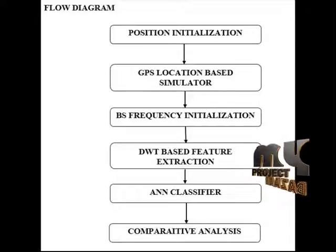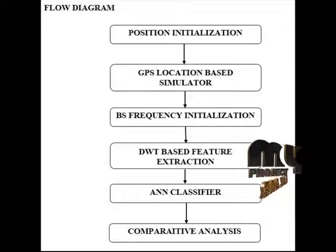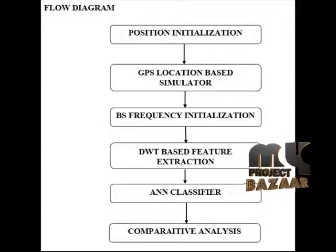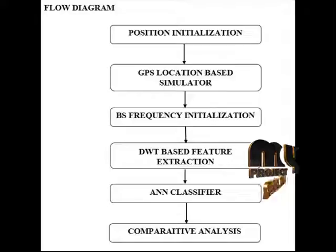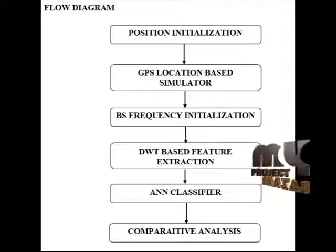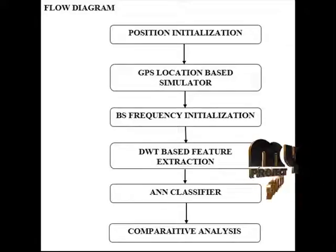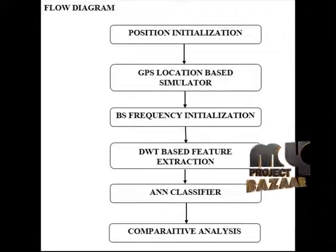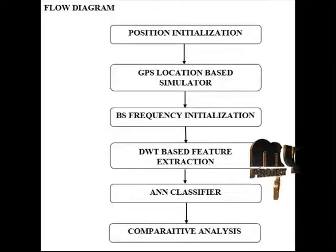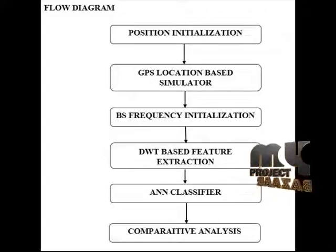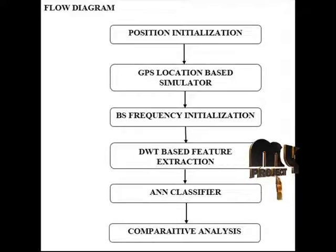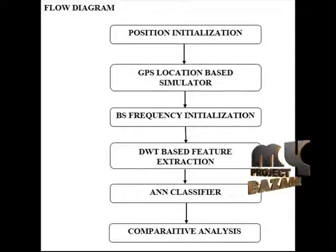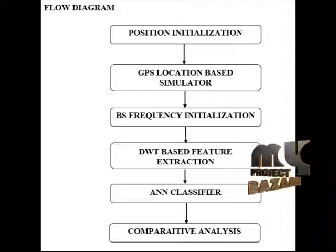After positional initialization, the GPS location-based simulator identifies the simulated performance of signal strength and signal estimation using various functions: post-fix functions, batch post-fix functions, and positional fix functions. The function of executing the positional fix is done using the SGMP file.